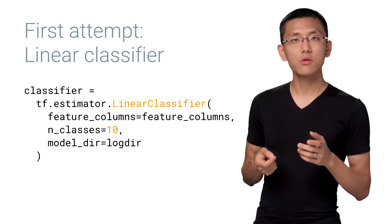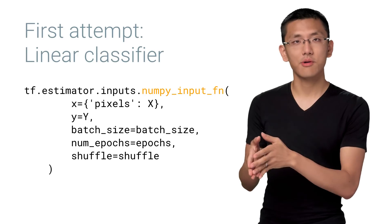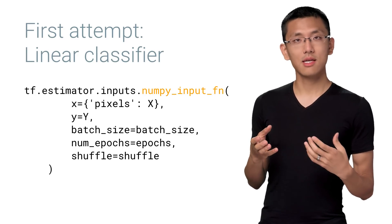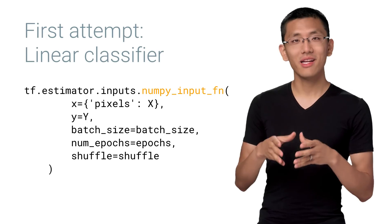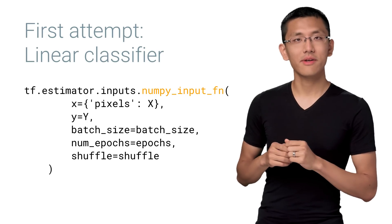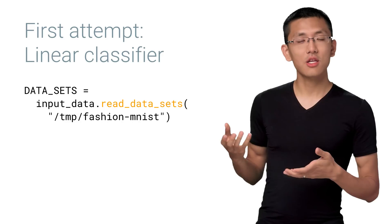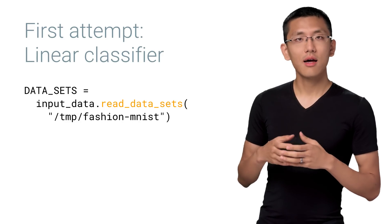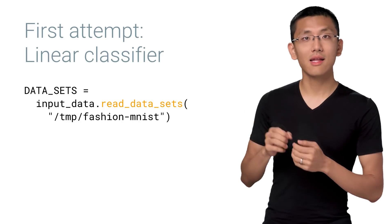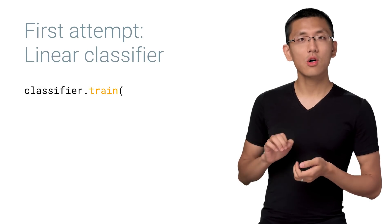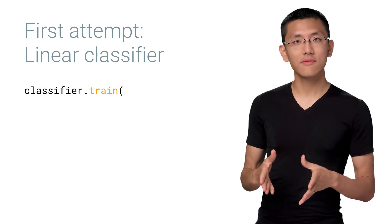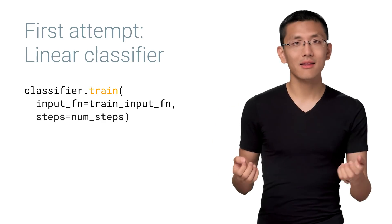Next, we'll create our linear classifier. We can have 10 different possible classes to label instead of the three that we used previously with the iris flowers. To run our training, we'll need to set up our data set and input function. TensorFlow has a built-in utility to accept a NumPy array and generate an input function right from that, so let's take advantage of it. We'll load in our data set using the input data module — I've already downloaded the data set to a folder, so we'll point to that here. Now we can call classifier.train to bring together our classifier, the input function, and the data set.